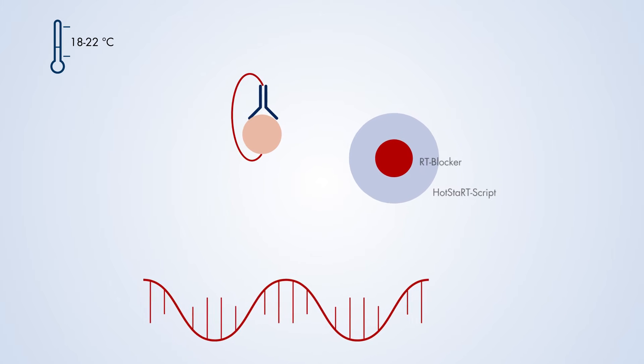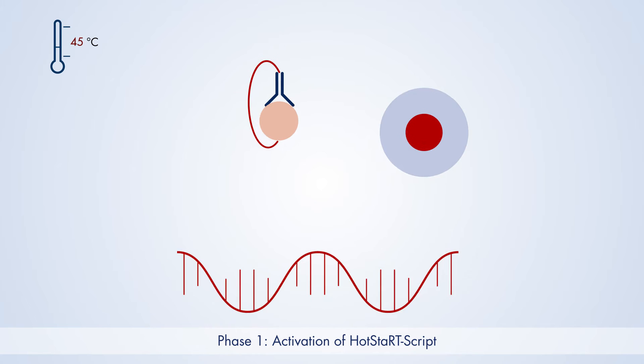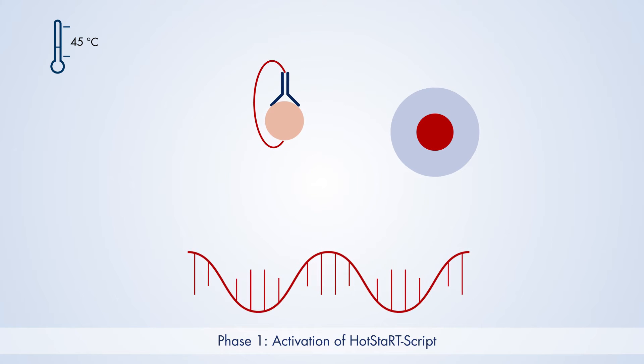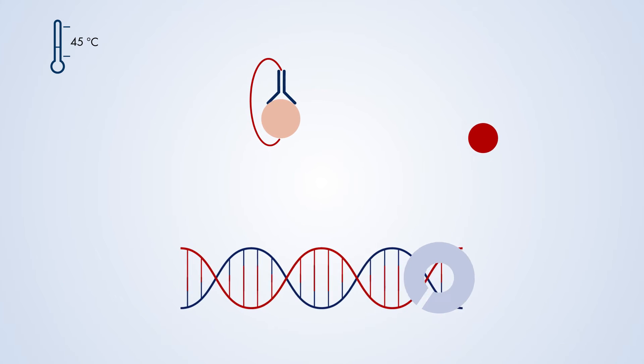During the first phase of the hot start, at around 45 degrees Celsius, the RT blocker is released from the hot start script and cDNA synthesis is initiated.